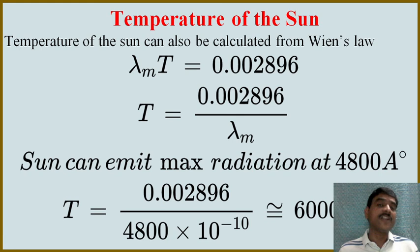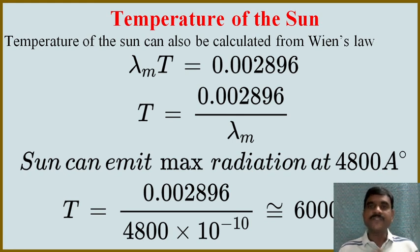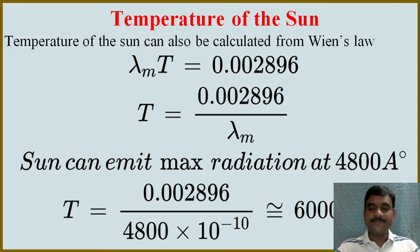So by using radiation laws — both Stefan's law and Wien's displacement law — we can determine the temperature of the sun to be approximately 6000 Kelvin. That is about this video. Thank you.